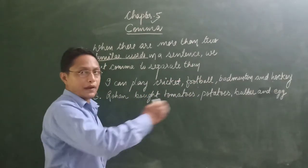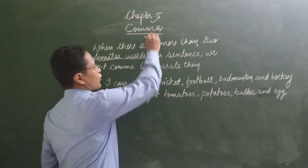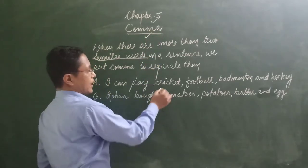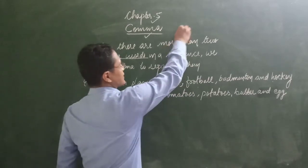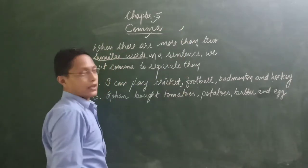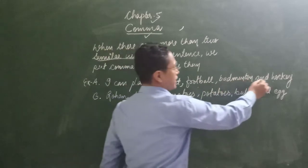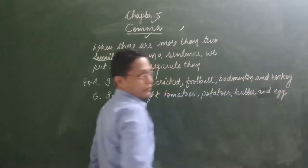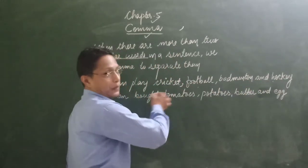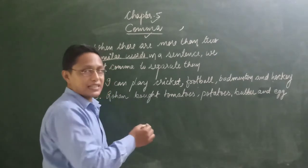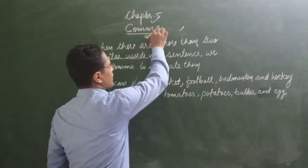So if we want to separate them, we use commas. Cricket is different than football, and badminton is different than walking. So when we separate similar words in a sentence, we use commas.